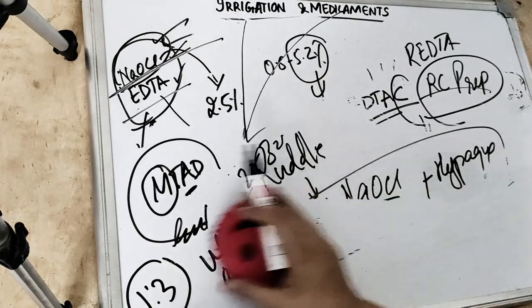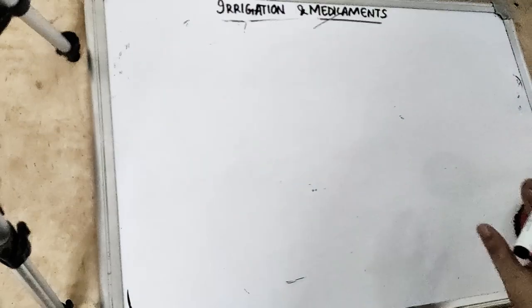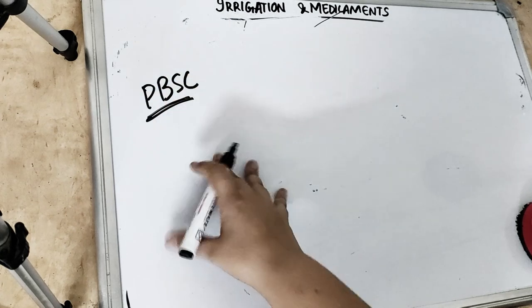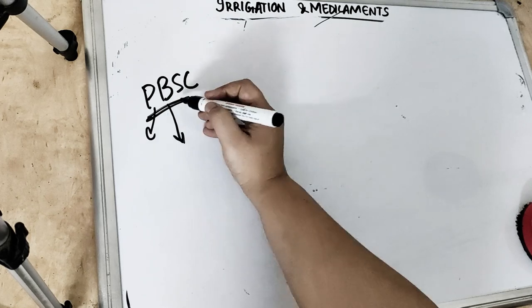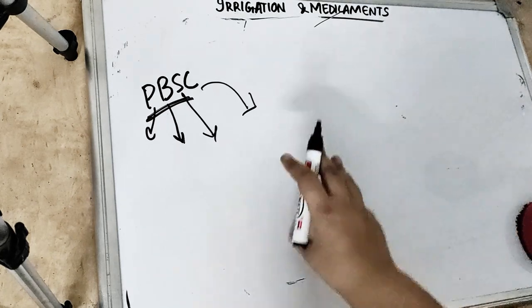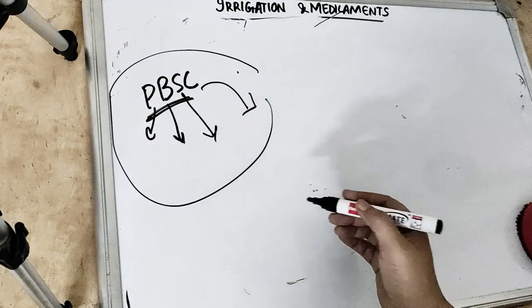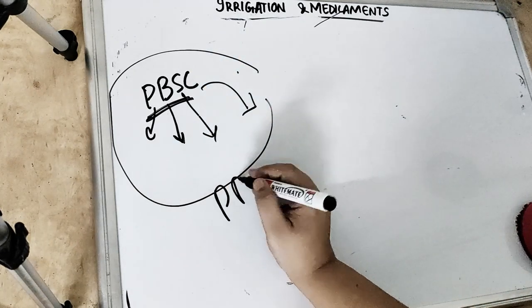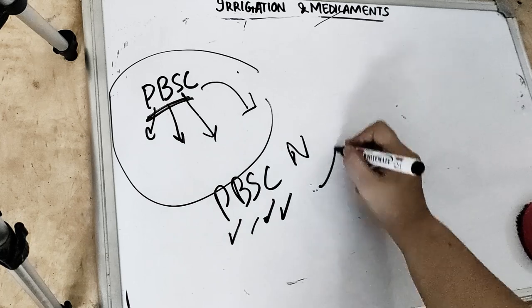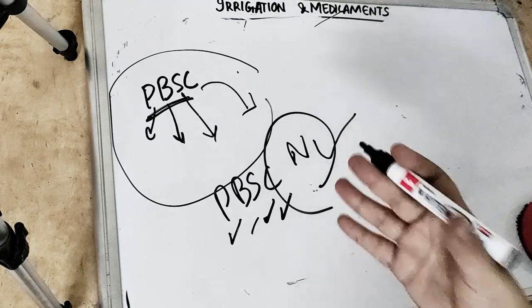Next we have medicaments. If we are talking about intracanal medicaments, that means we are going to use something with medicinal purpose. Earlier in ancient times we used PBSC which was used by Grossman. This is penicillin, bacitracin, streptomycin and C is cryolytic which is a vehicle. This has bacteriostatic effect, so it is not used. Then this was modified to PBSCN: penicillin, bacitracin, streptomycin, cryolytic as well as neomycin. They added antifungal but it also had bacteriostatic effect. So that is also not used now.